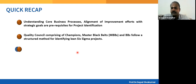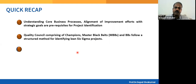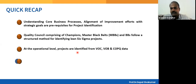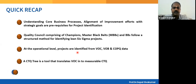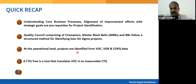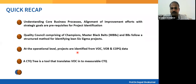The quality council — comprising champions, master black belts, and black belts — follows a structured method for identifying Lean Six Sigma projects. They have criteria and guidelines established in the company. At the operational level, projects are identified from Voice of Customer, Voice of Business, and Cost of Poor Quality data; at the top level, projects are identified from financial data — that is the top-down approach.